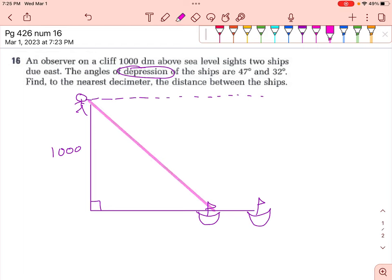So to see one of the ships, it has to go down 47 degrees, and to see the other ship, again, here's your normal sight line, your sight line has to go down 32 degrees.